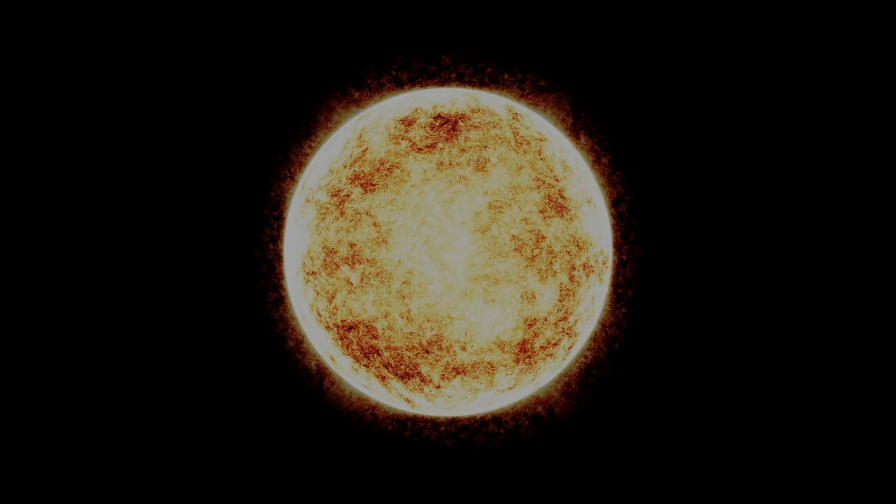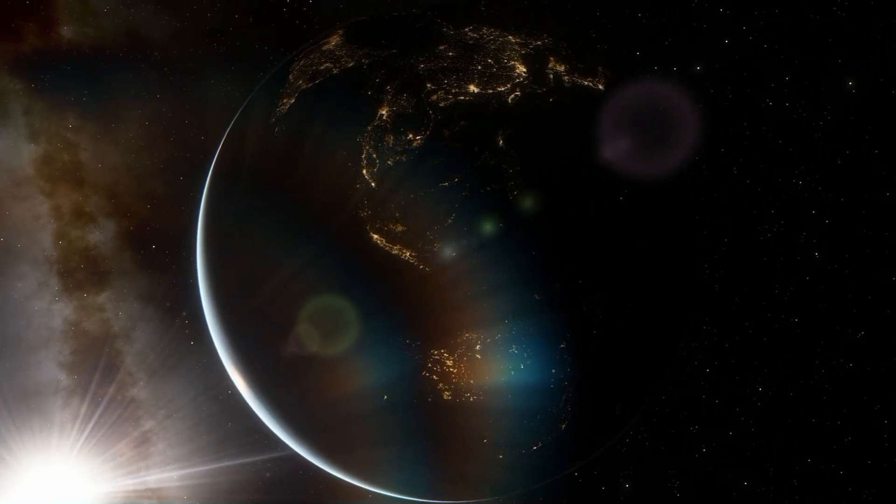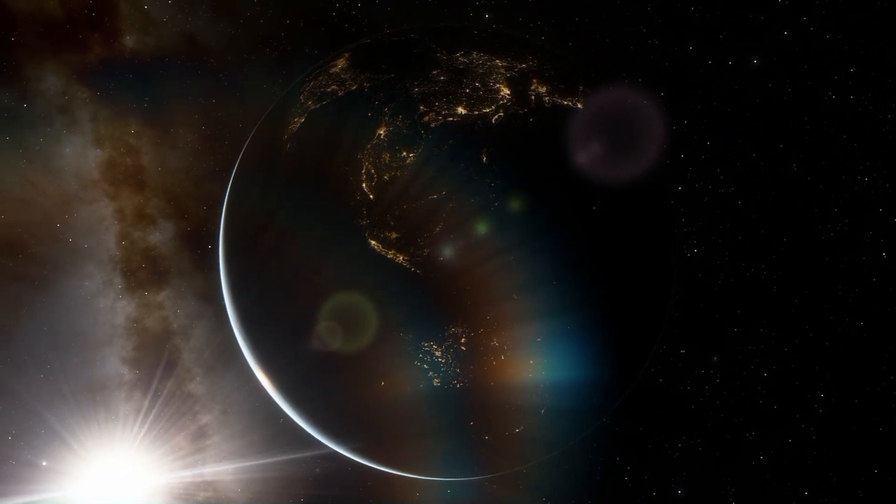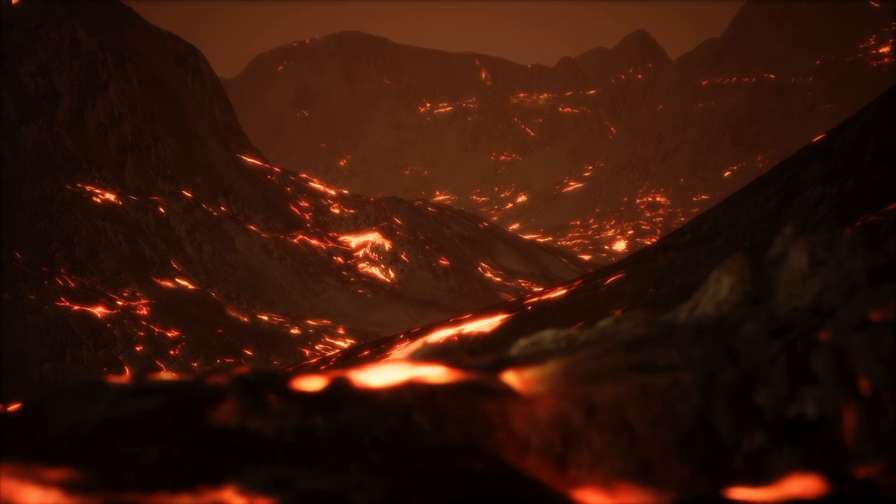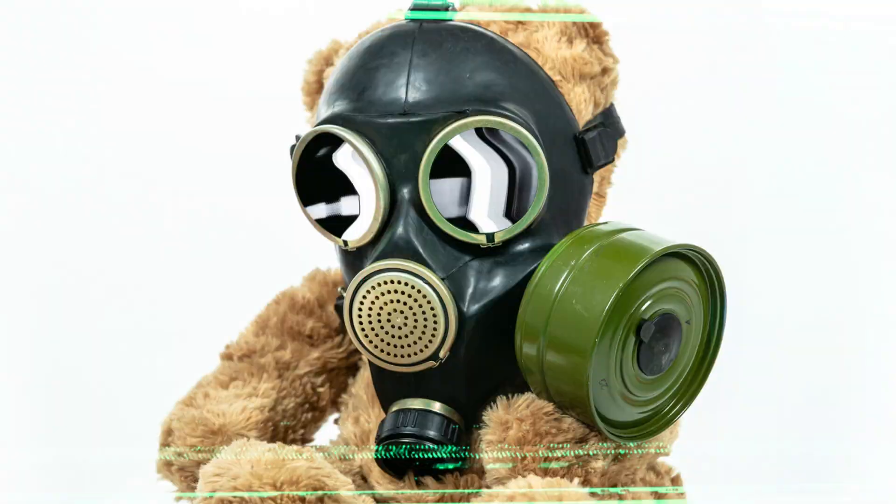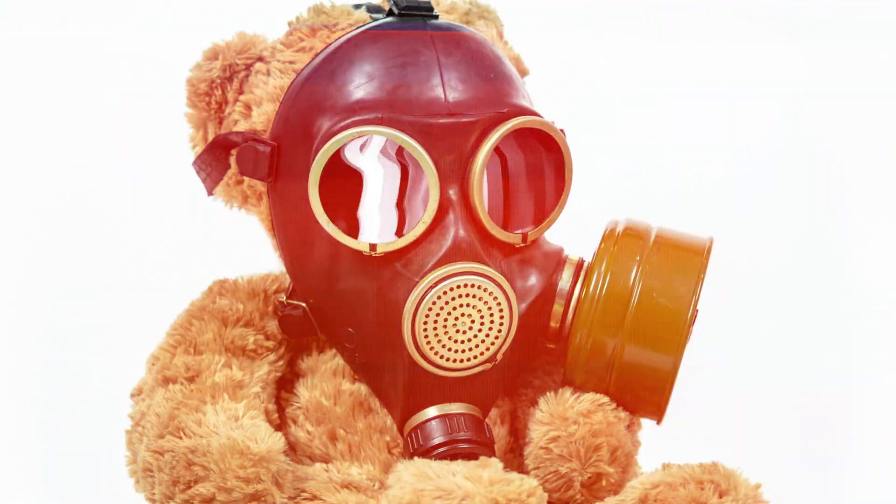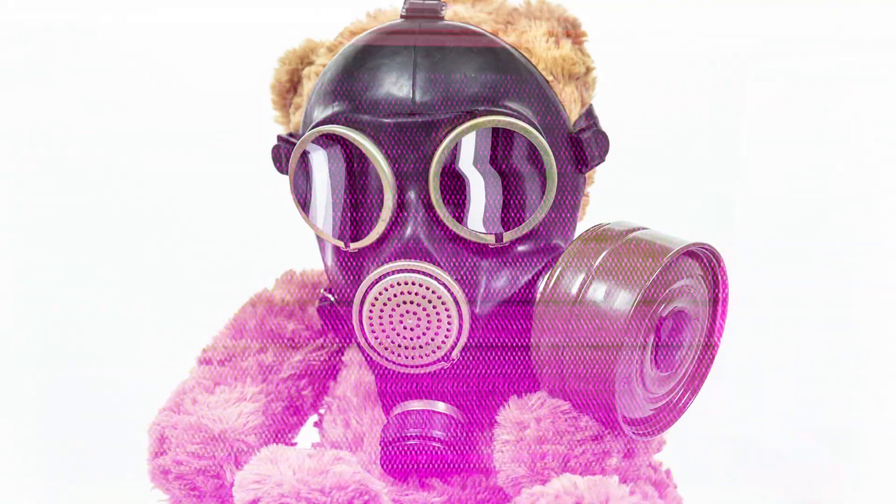This proximity to its star means that Kepler-70b is subjected to an unimaginable level of heat and radiation. We're talking about surface temperatures exceeding 12,000 degrees Fahrenheit, which is even hotter than the surface of our Sun. The planet's surface is a seething cauldron of volcanic activity, with rivers of molten lava flowing across its landscape. The atmosphere is a toxic mix of gases, including vaporized metals and silicates, creating a suffocating and deadly environment.